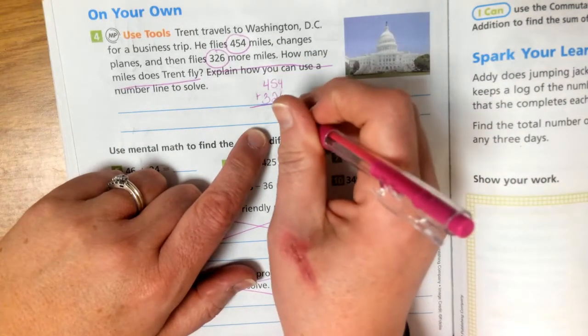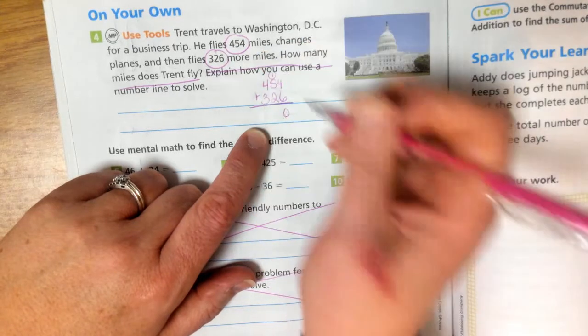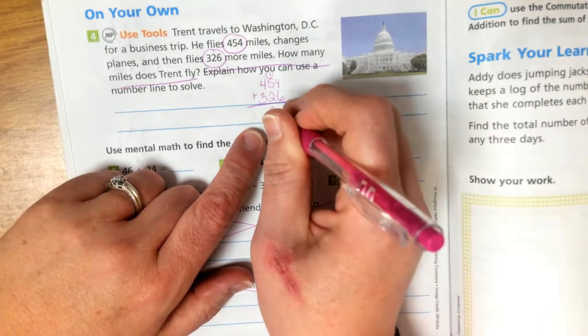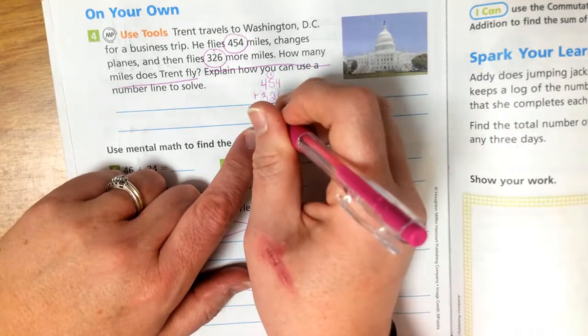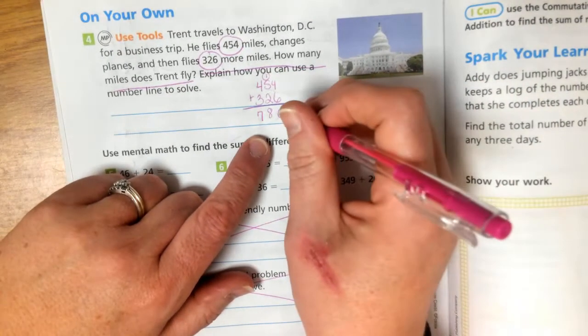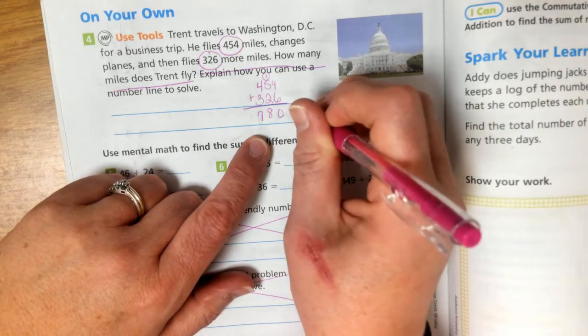6 plus 4 is 10. Regroup of 1. 5 plus 2 is 7 plus 1 is 8. 4 plus 3 is 7. So he flies 780 miles.